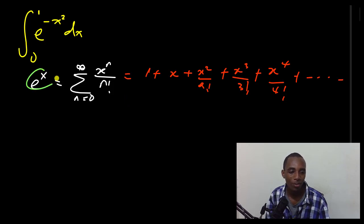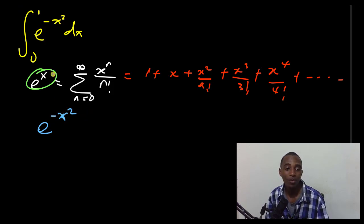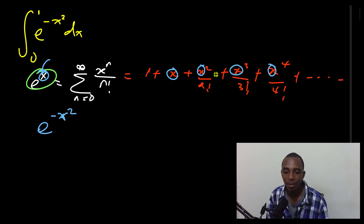So now that we know this, let's use it to find out what this is, e to the power negative x squared. All right? And this is going to be very easy because I'm just going to substitute for this x in this function here. So wherever there is x, I'm going to substitute it with negative x squared.